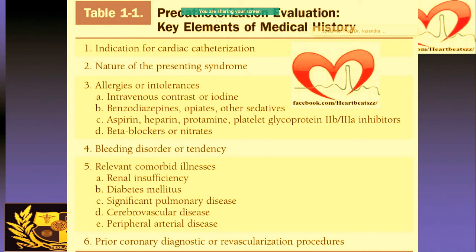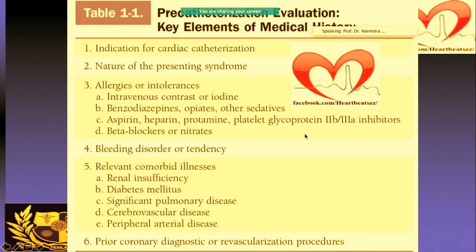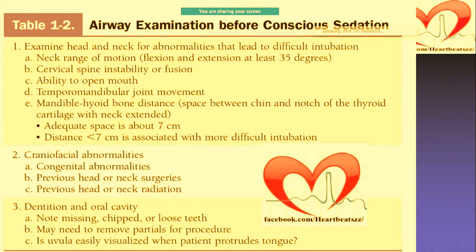Why do you need to ask all these things? Because sometimes it may happen that you are trying to give a drug to the patient and then you realize the patient has all these problems. Sometimes the patient may have a TIA during the interventional procedure. That's the reason you need to know — for example, if the patient suddenly develops acute hemiparesis, is it new or did the patient have it before?